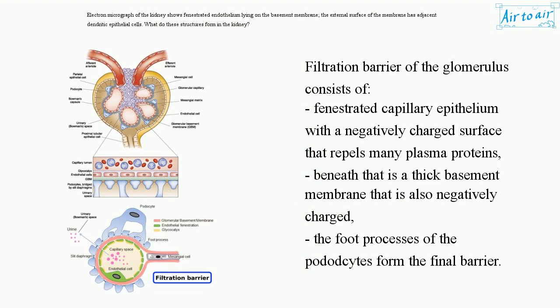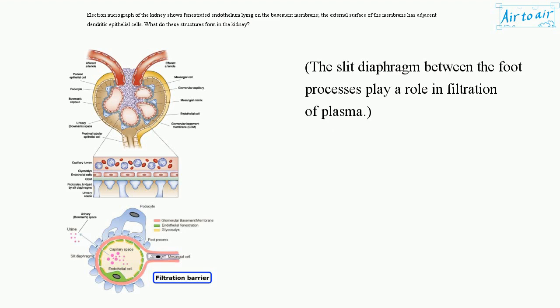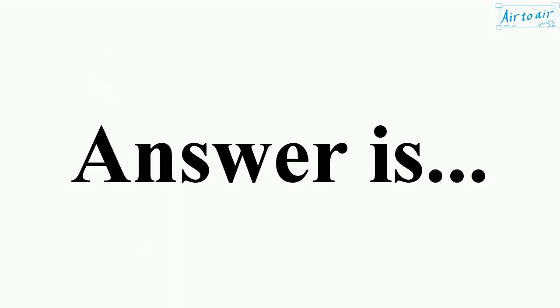The filtration barrier of the glomerulus consists of fenestrated capillary epithelium with a negatively charged surface that repels many plasma proteins. Beneath that is a thick basement membrane that is also negatively charged. The foot processes of the podocytes form the final barrier. The slit diaphragm between the foot processes plays a role in filtration of plasma. The answer is D. Filtration barrier.